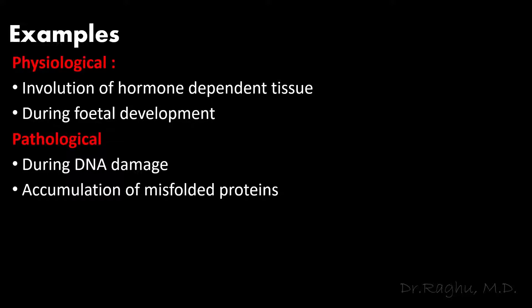Apoptosis could be both physiological as well as pathological. For physiological examples: first, involution of hormone-dependent tissue — the best example is the endometrium, which is dependent on estrogen and progesterone. When there is hormonal withdrawal, the endometrial tissue shuts off and dies. Second, during fetal development, many tissues not required in adult life undergo apoptosis.